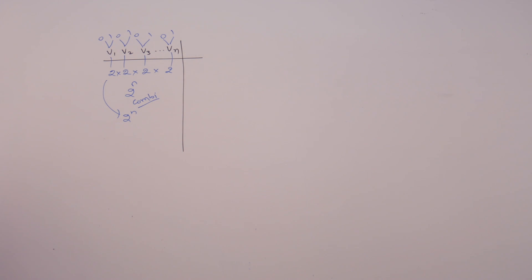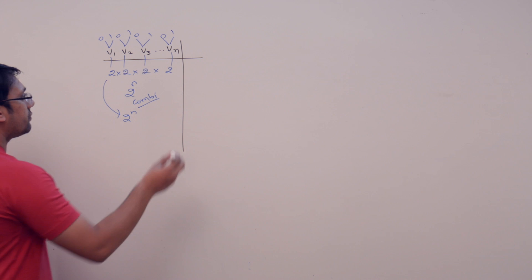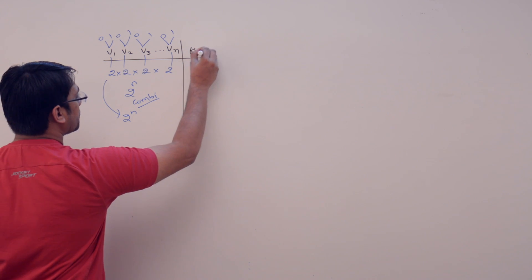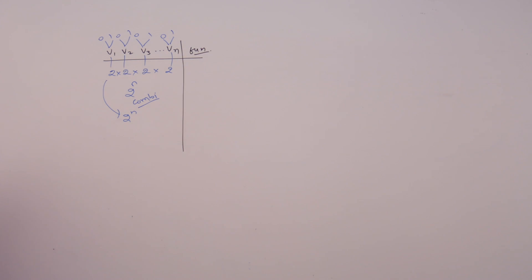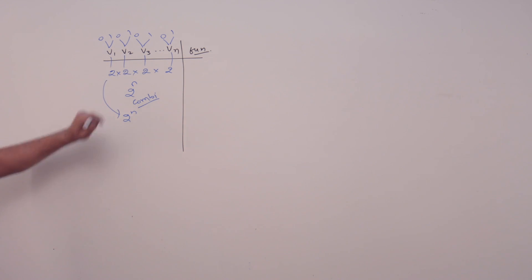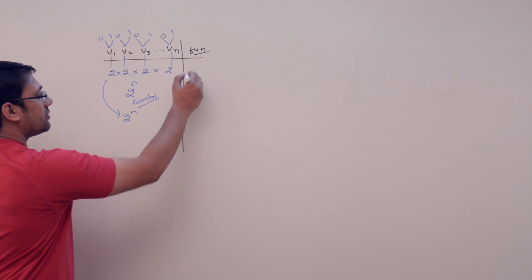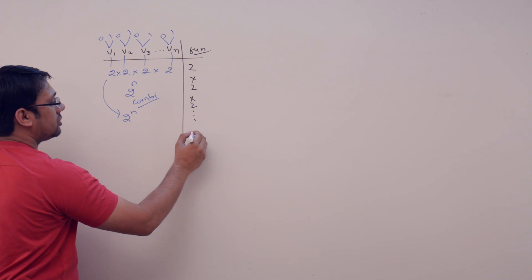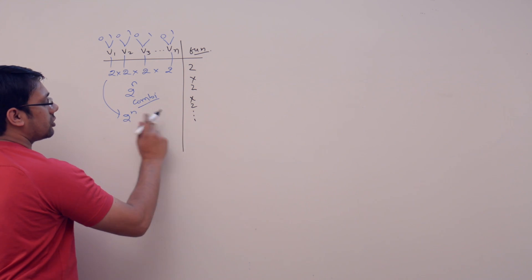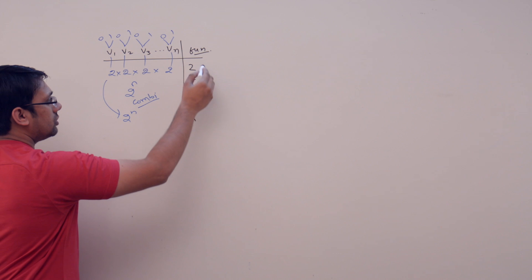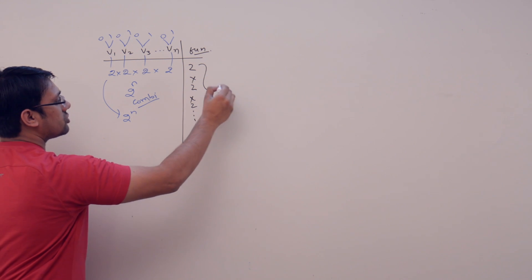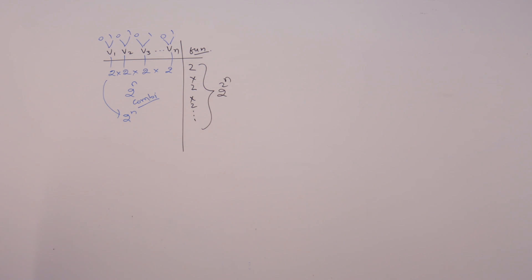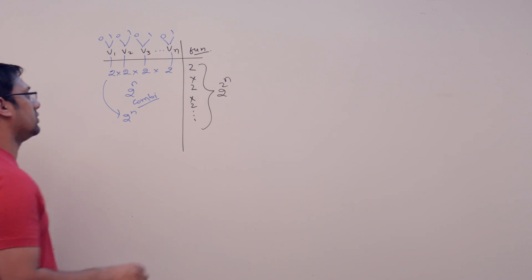In the same way, if we look at how many functions are possible — for all these different combinations, for every combination a function can assume two values, either 0 or 1. So for 2 raised to power n combinations, we have two values each, giving 2 raised to power 2^n switching functions possible, as already discussed in the previous video.